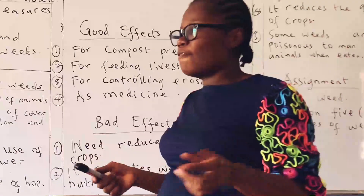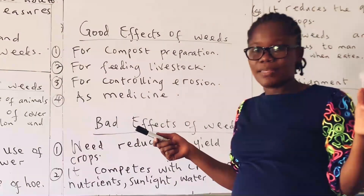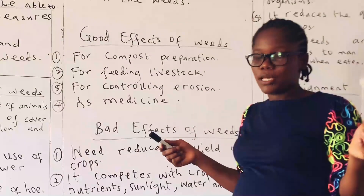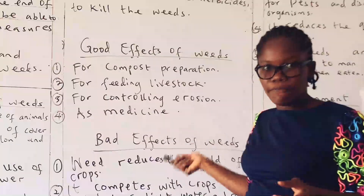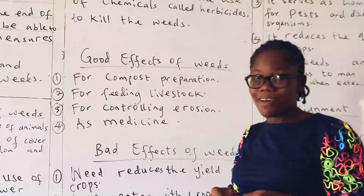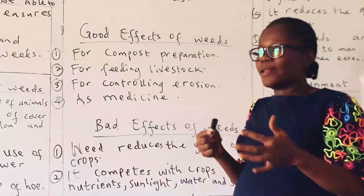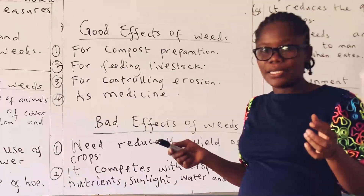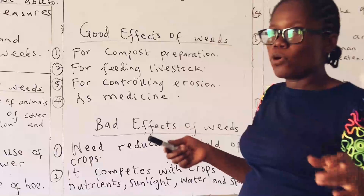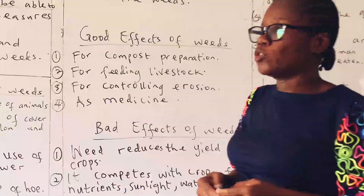Now let's consider the good effects of weeds. Not only do weeds grow among our plants — they actually have some good parts. The first one is for compost preparation. We talked about compost manure in our previous classes — it has to do with decayed plant and animal materials. When weeds decay, they can serve as compost manure which we can use to grow our crops and make them yield better.